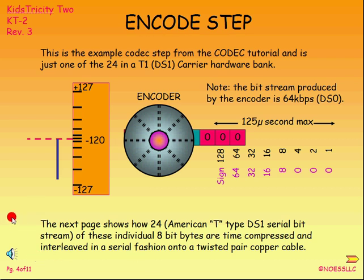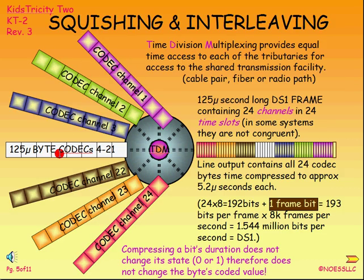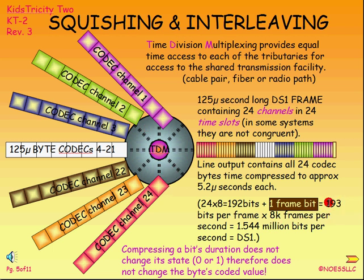I've got a digital T-type carrier system. I'm going to interleave 24 codec outputs and stick them out on the line. I've got 125 microseconds for the 8-bit byte from channel 1, but I've got to squish it down in time, because I have to share it inside that 125-microsecond window. Here's channel 1 squished down, channel 2 squished down, channel 3, and so on. I end up with 24 time slots of 8 bits each, which gives me 192 bits. But I need to add a framing bit, which makes 193 bits per frame. There are 8,000 rotations per second, so I've got 8,000 frames per second of 193 bits.